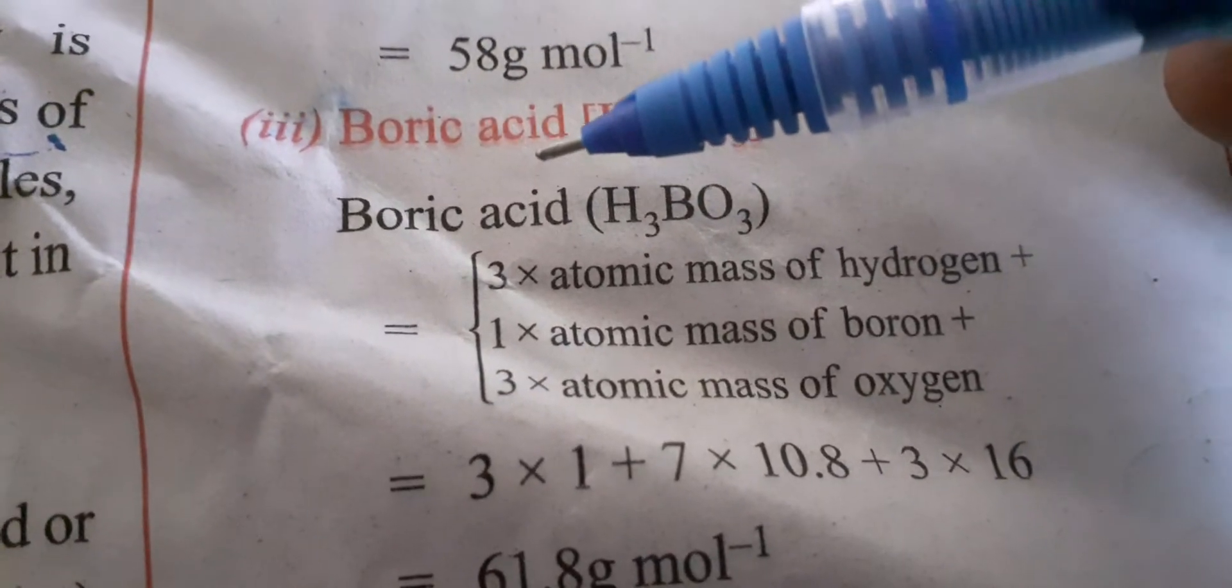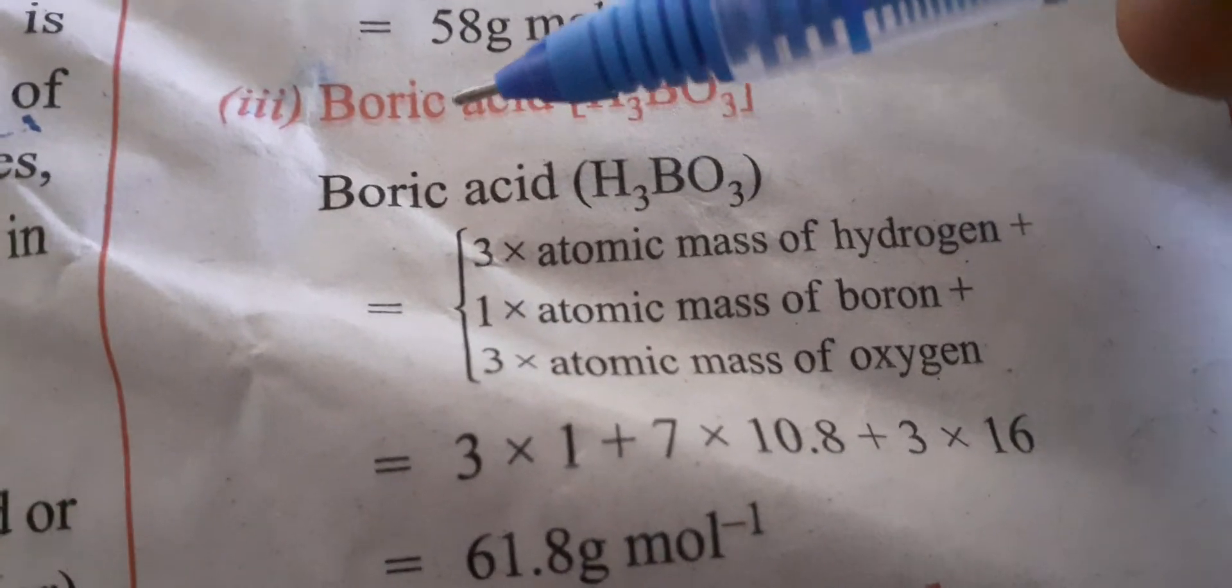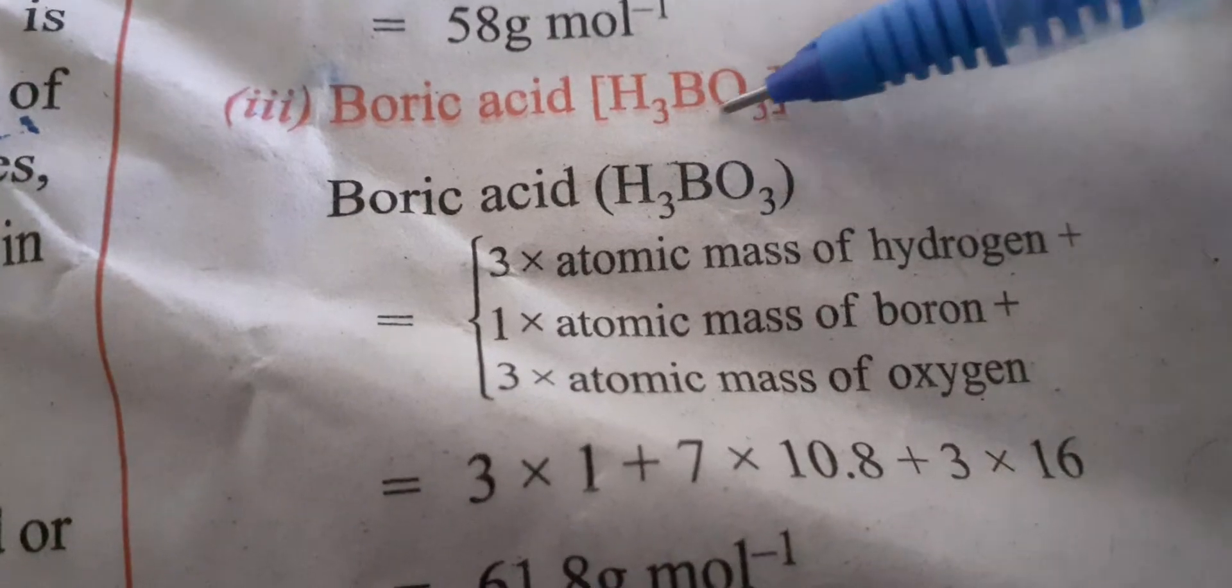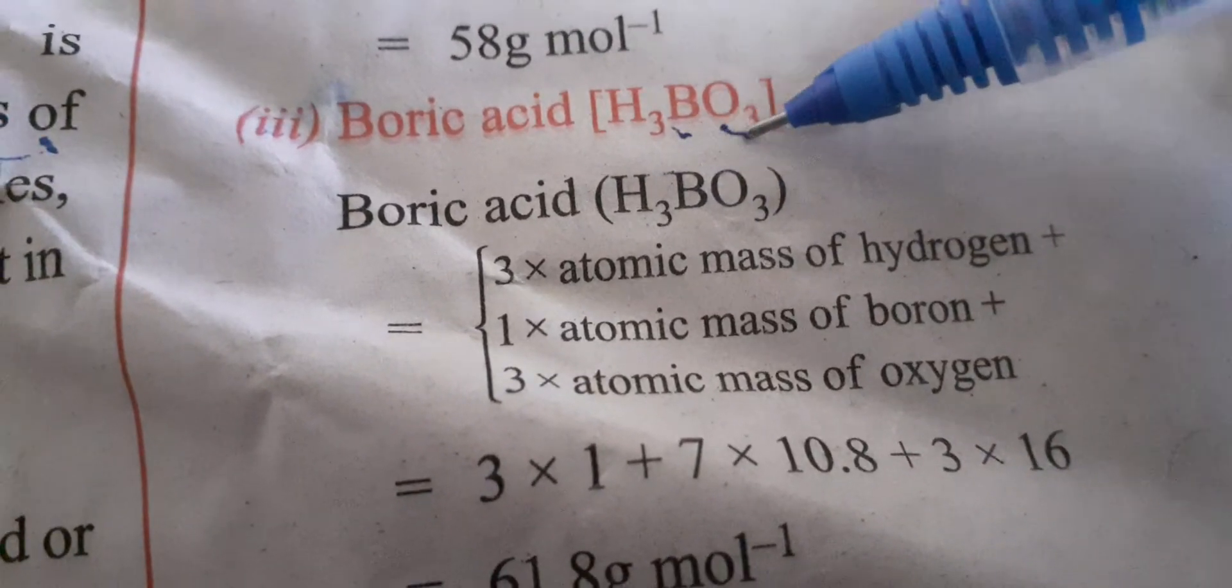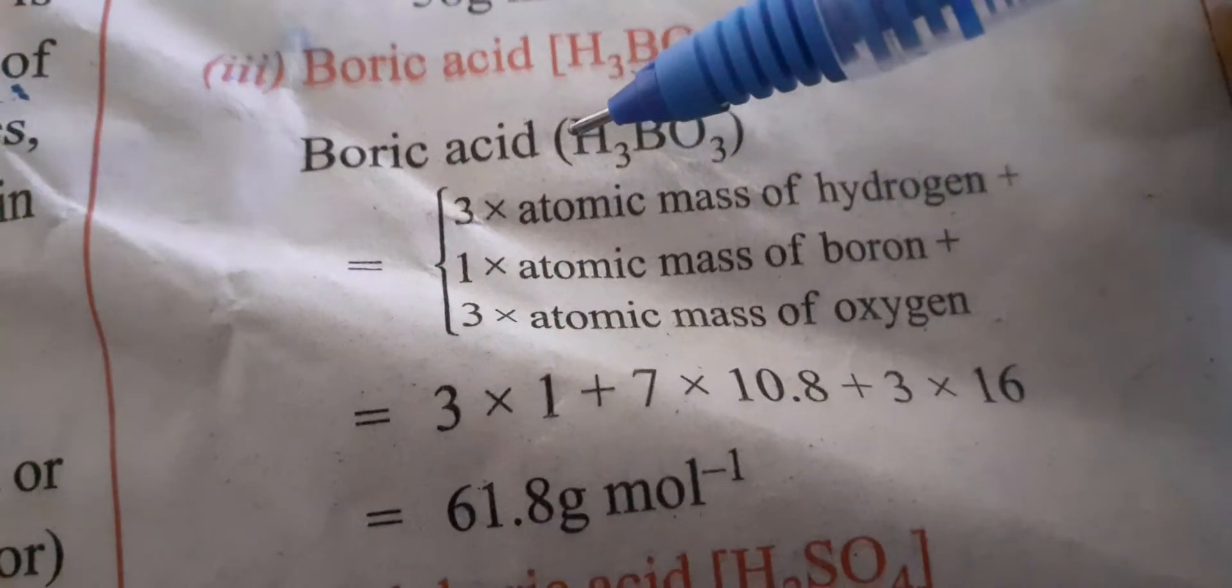Next is boric acid. We are going to calculate the molar mass of boric acid. What is the formula for boric acid? H3BO3, boric acid.